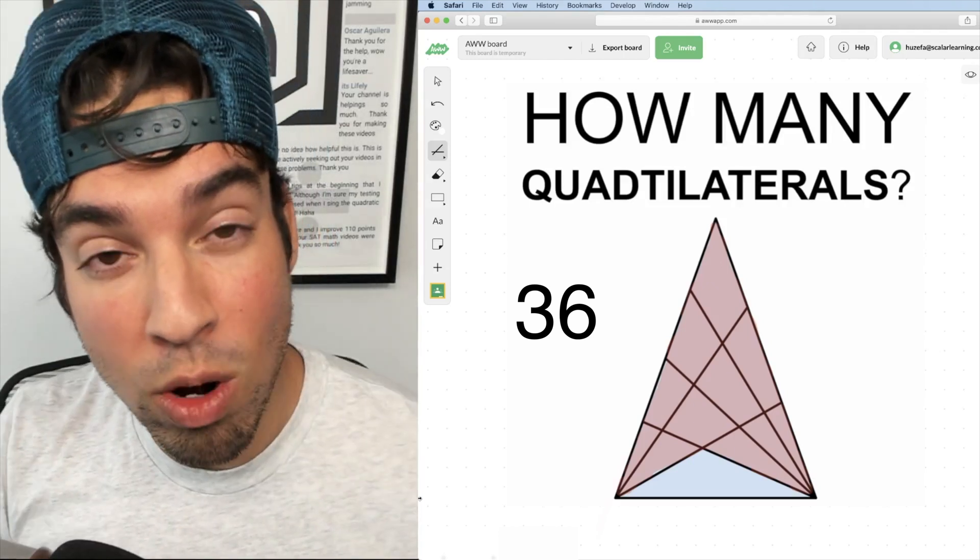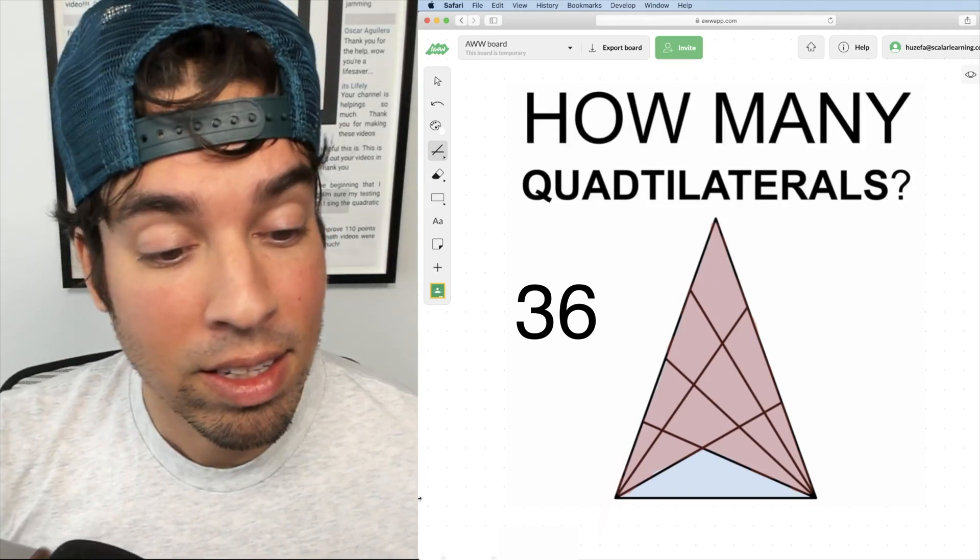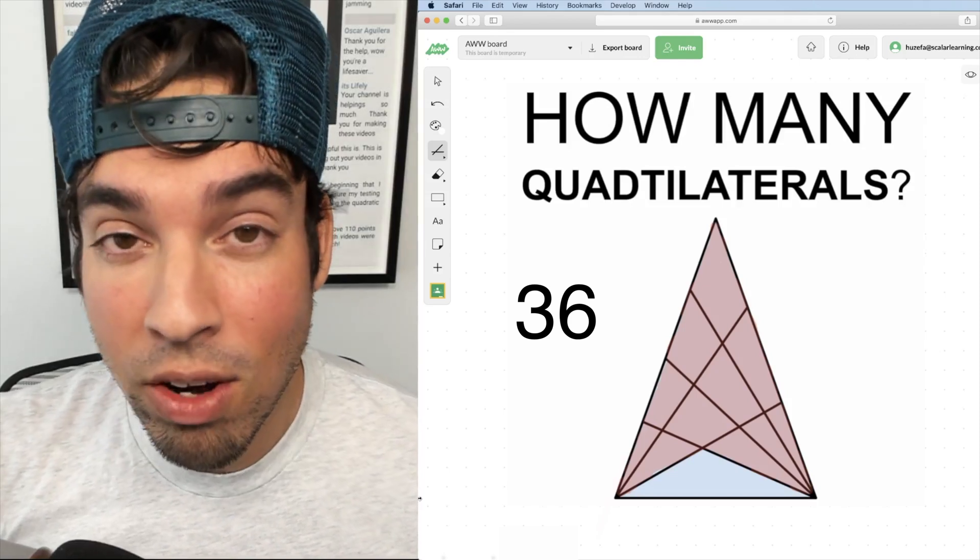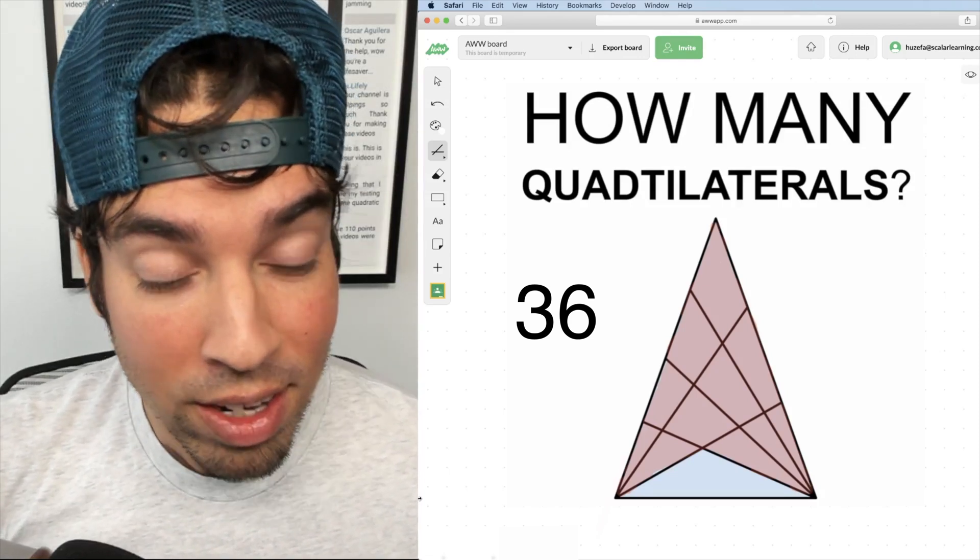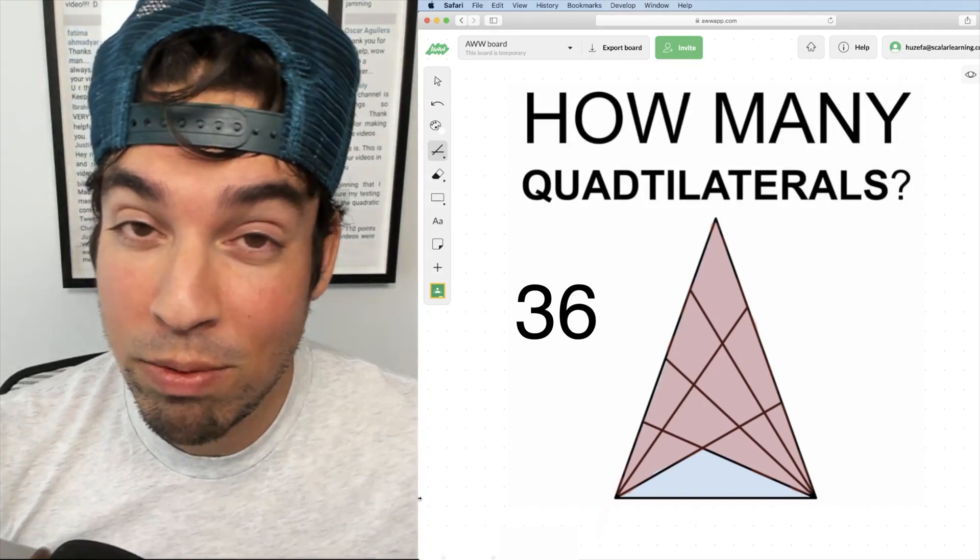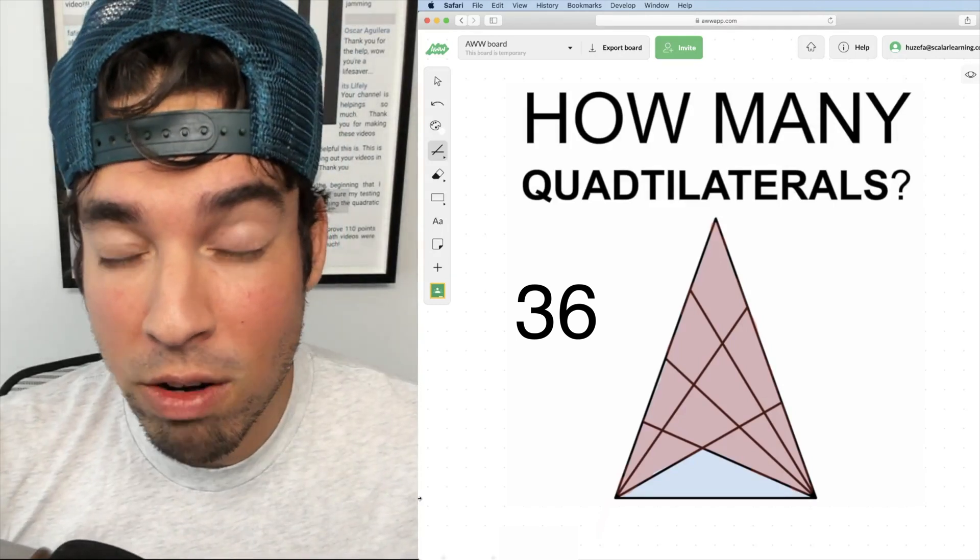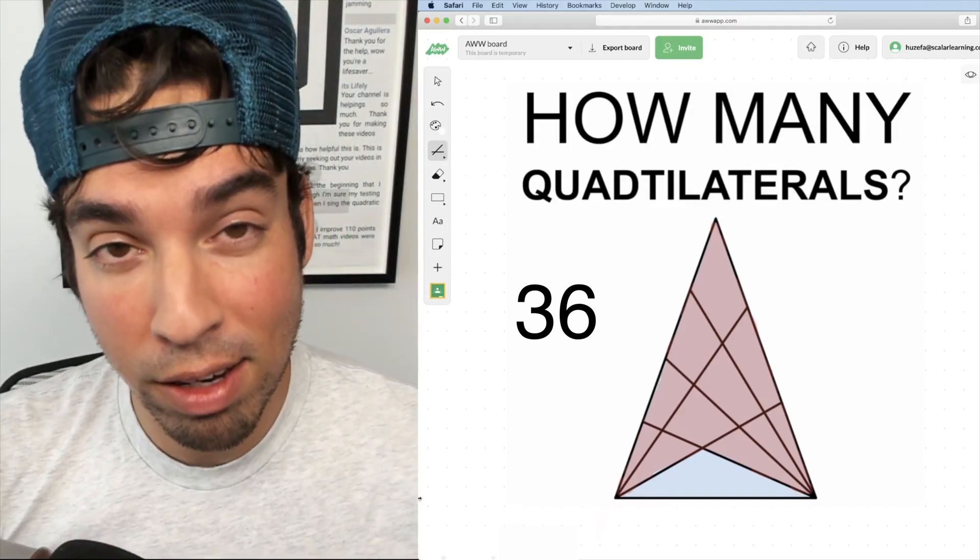There are thirty-six quadrilaterals embedded within this diagram. And I know the first time that I looked at it, I definitely didn't count anything close to thirty-six. So that's a very difficult problem. And if you did get it right on the first try or even on the second try, big pat on the back for yourself.